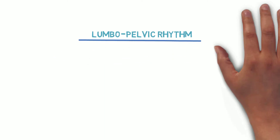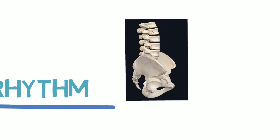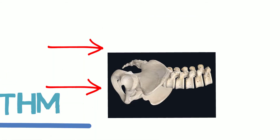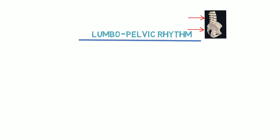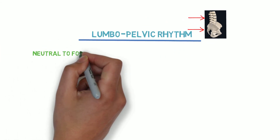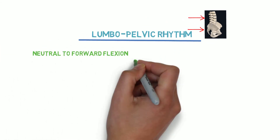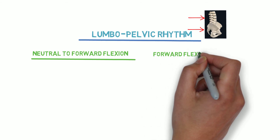Hello, let's take a look at the lumbar pelvic rhythm. Lumbar pelvic rhythm is a movement relationship of the lumbar spine and the hips during forward flexion and extension. The two scenarios we will examine today are neutral to forward flexion, and return from forward flexion to neutral.